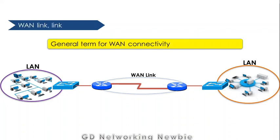Finally, leased lines are also generally known as a WAN link or a wide area network link — a general term that can be applied to all of the names we just discussed. With these different names for leased lines, this is the end of today's video. Thank you very much for your time.